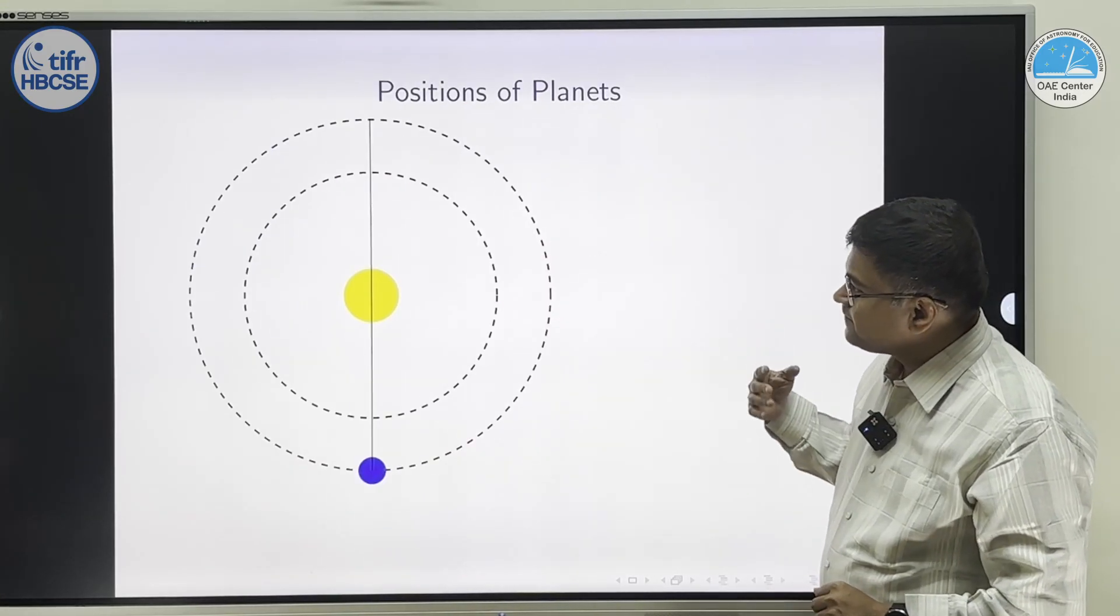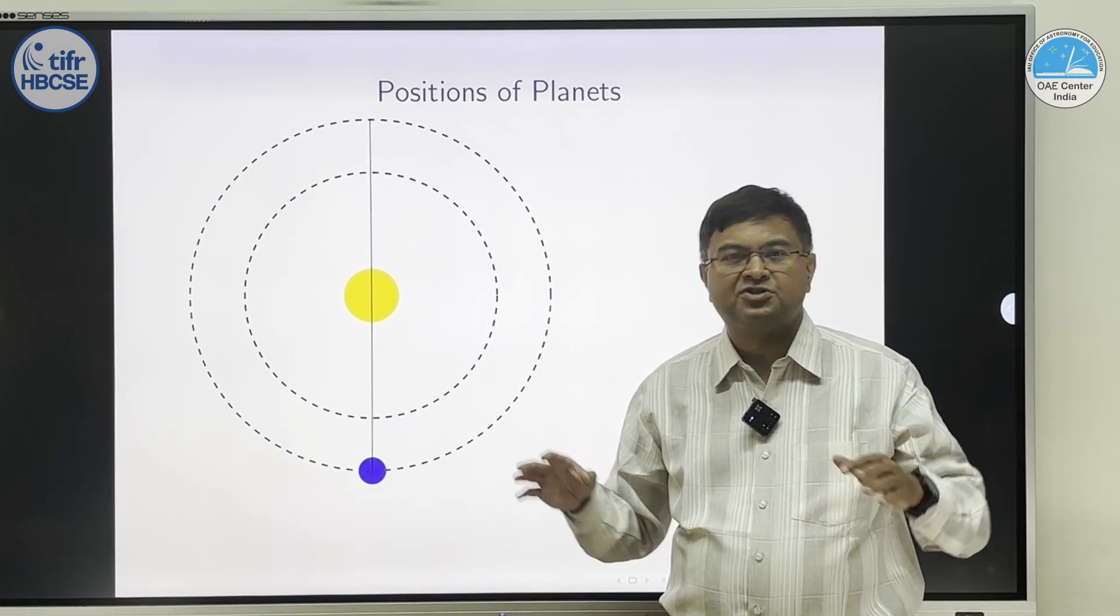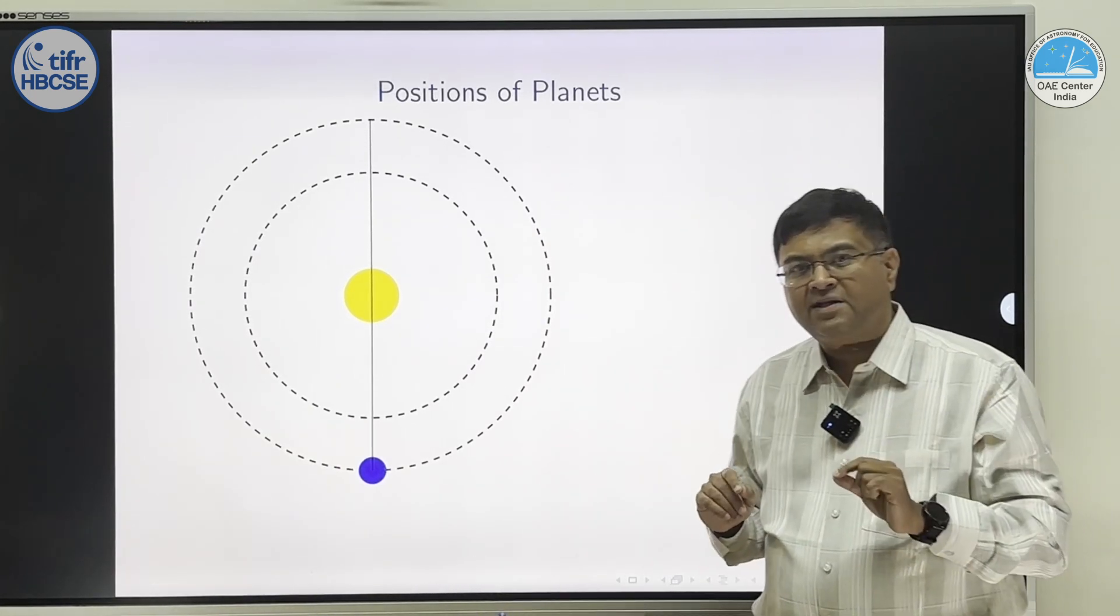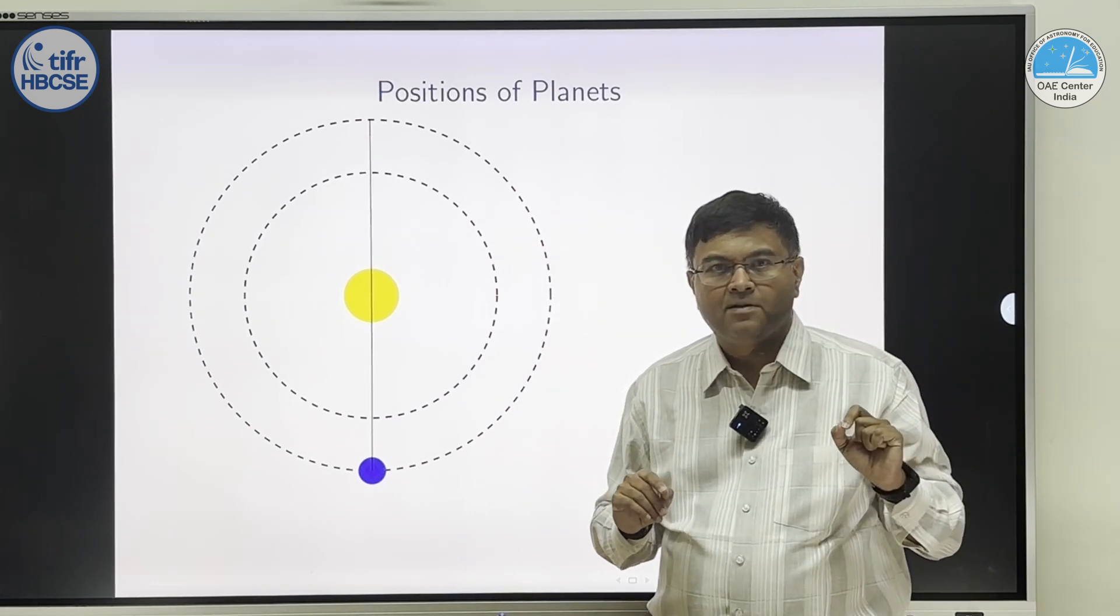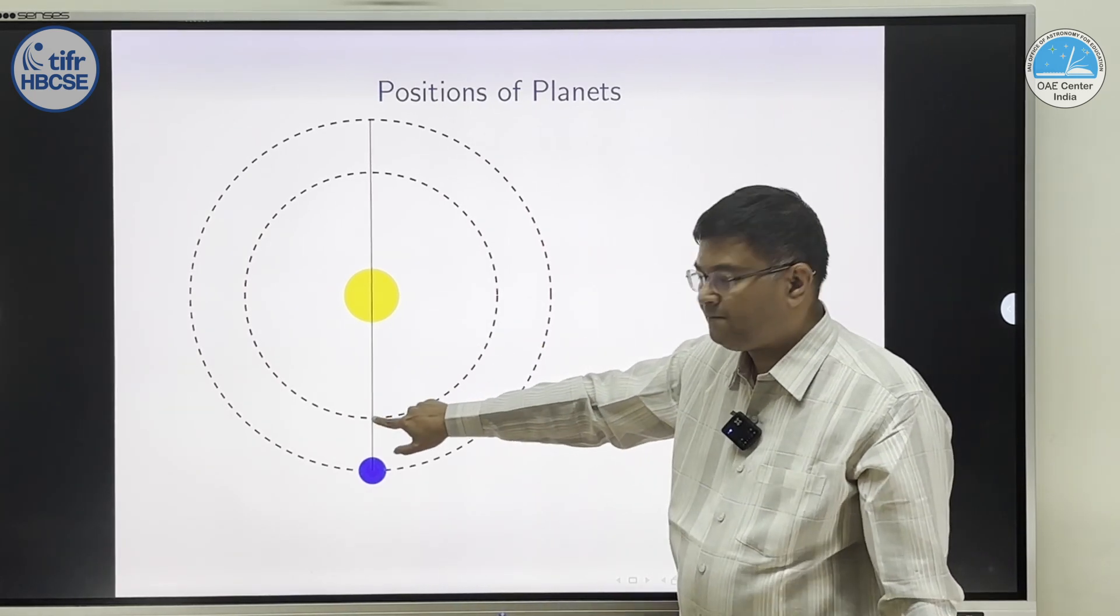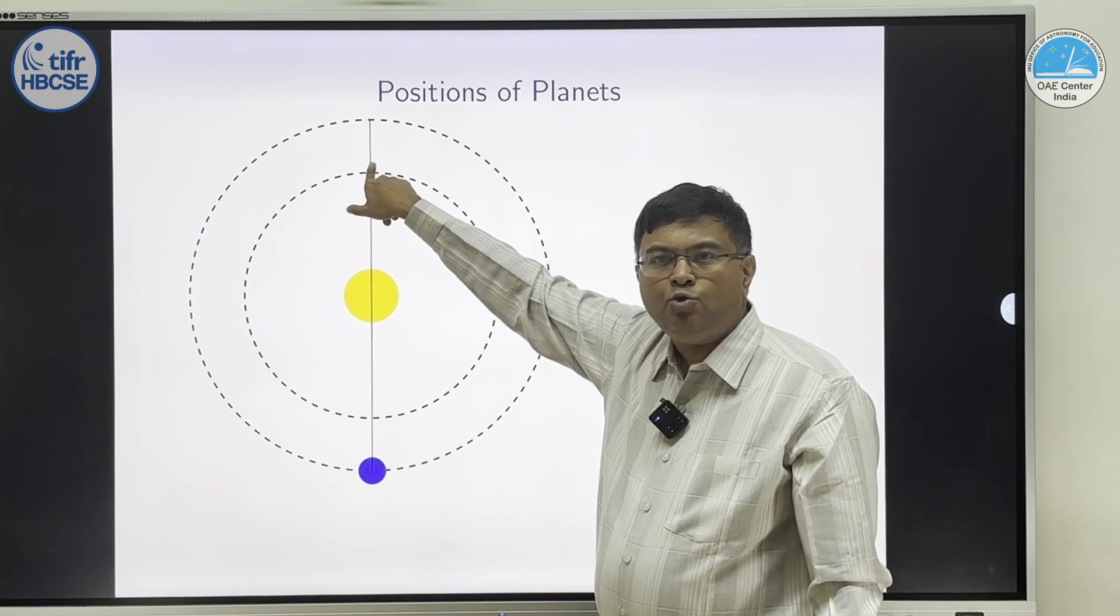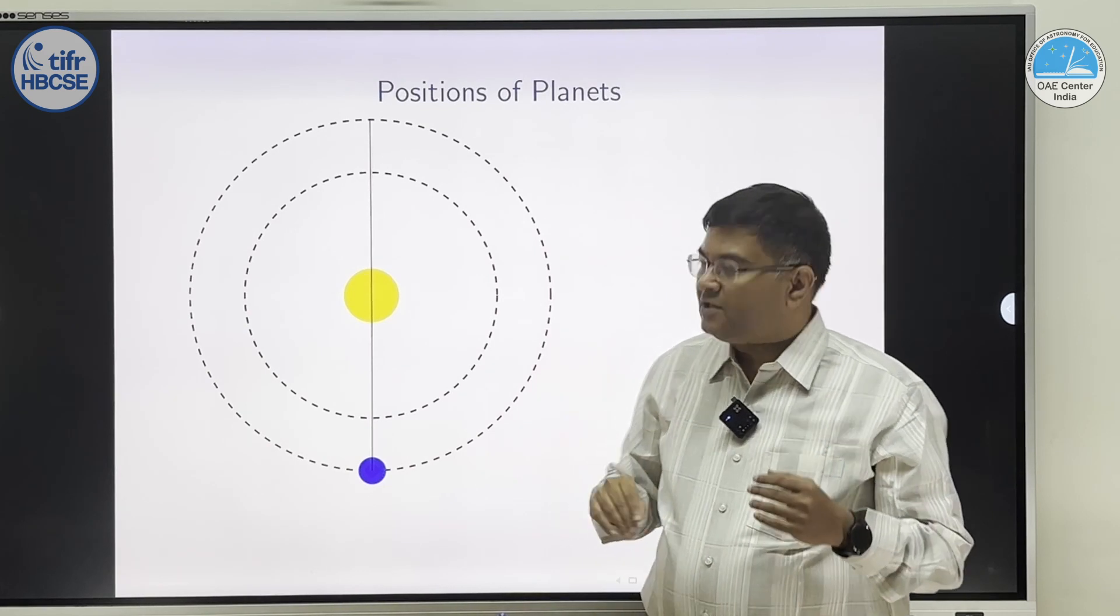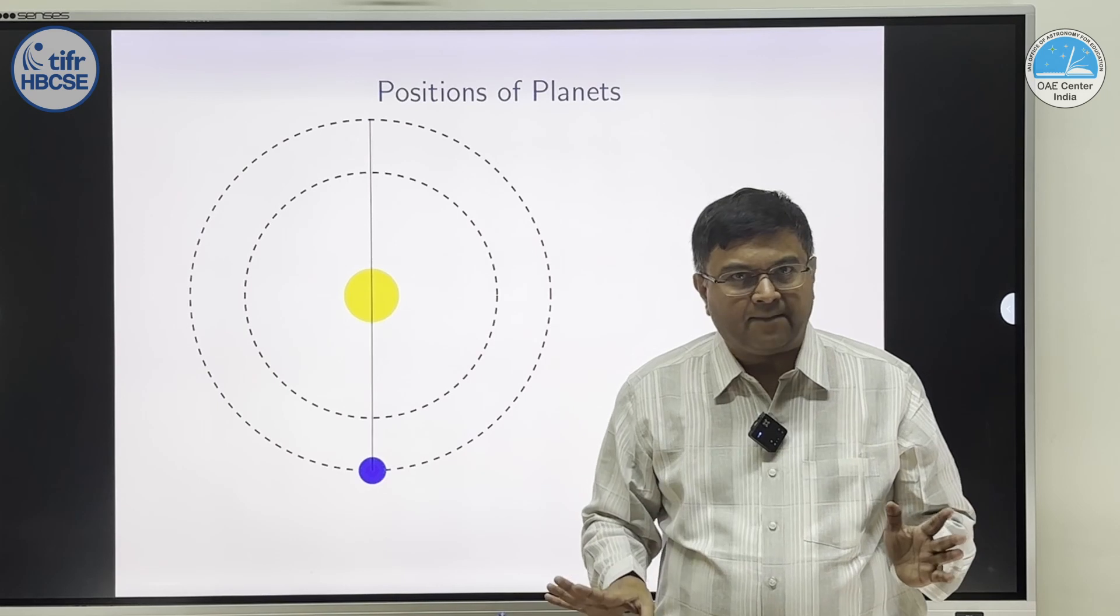Now, coming to next part. We saw this for the outer planets. How do we define elongation and quadrature? Because for outer planets, the elongation is possible from 0 to 180. For inner planets, 0 to 180 elongations are not possible. 0 is possible. This is 0, this is 0. But, you can't even get quadrature. You can't even get elongation 90. There will be some maximum elongation which will be between 0 and 90.